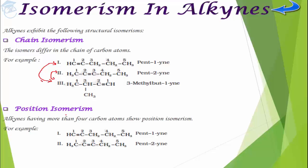Next is position isomerism. In position isomers, the position of the triple bond is different while the carbon chain remains the same. For example, 1-pentyne and 2-pentyne are position isomers of each other.